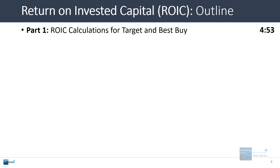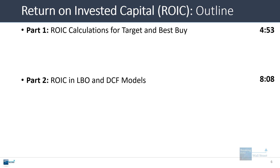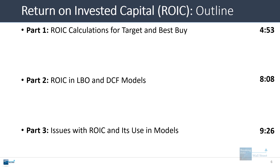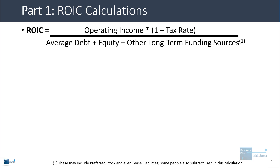That's the short version — let's go into a slightly longer version now. I'll start with the ROIC calculations for Target and Best Buy and explain some of the nuances. Then we'll go into ROIC in LBO and DCF models, and then explain some of the issues with ROIC and how you can use it in models. The basic definition is pretty simple: operating income times one minus the tax rate, over the average invested capital. The nuances creep in in a few places.